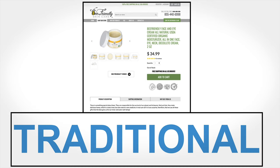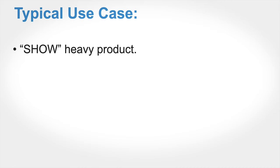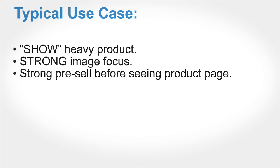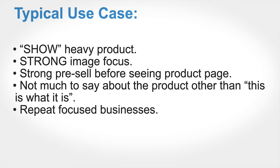There are only three main types of product offer pages. The first is the traditional, which is short form—not a lot going on, everything stuck above the fold. Typical use cases are show-heavy products with a strong image focus, or brands that are really repeat-focused with low-ticket items. This was the style that existed back in 2005 before people scrolled and before mobile devices.